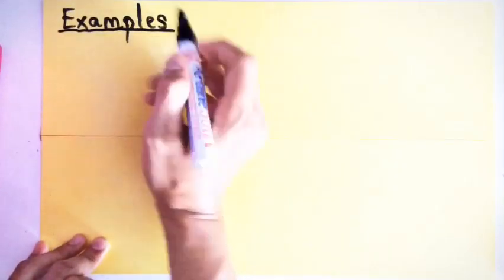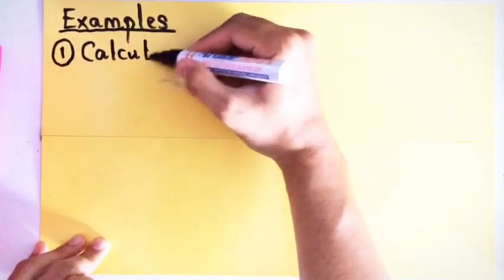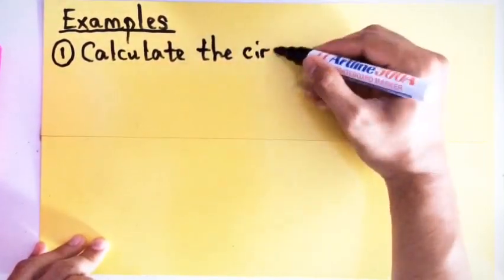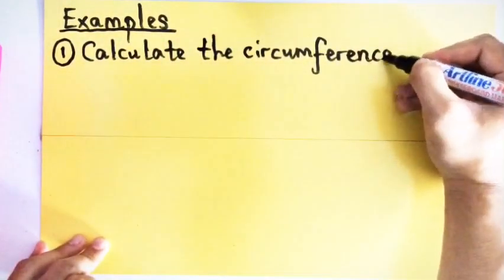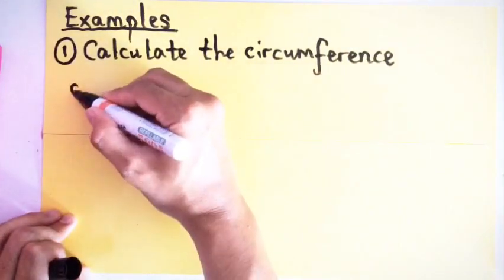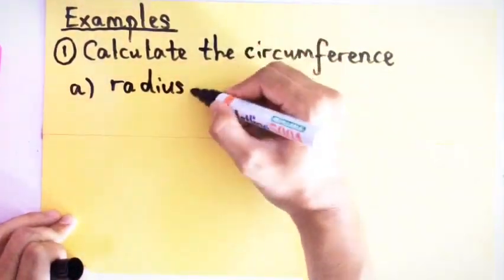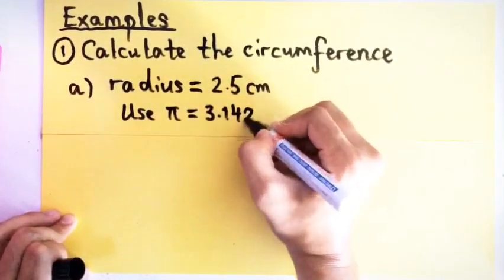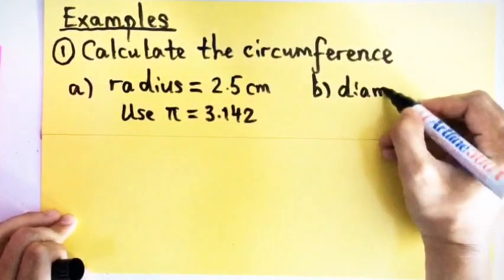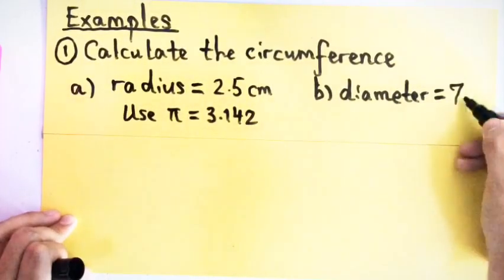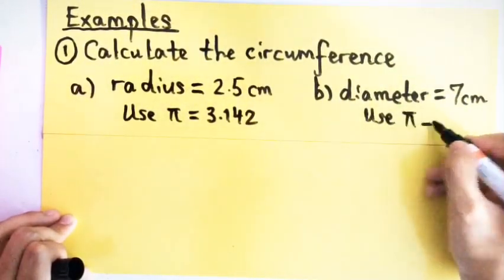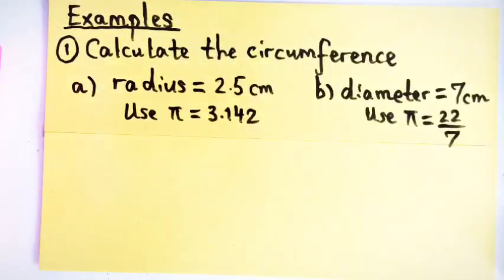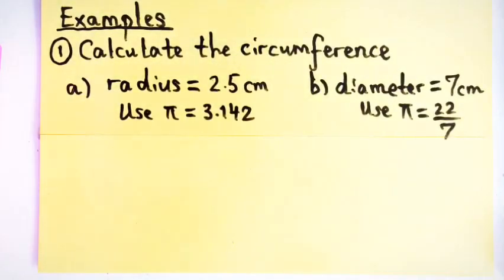Now looking at the first examples. Let's say you want to find the length of your circumference if they give you radius equals to 2.5 cm. You have to use π = 3.142. The other question, they give you diameter equals to 7 cm but different value of pi, which is 22 over 7.